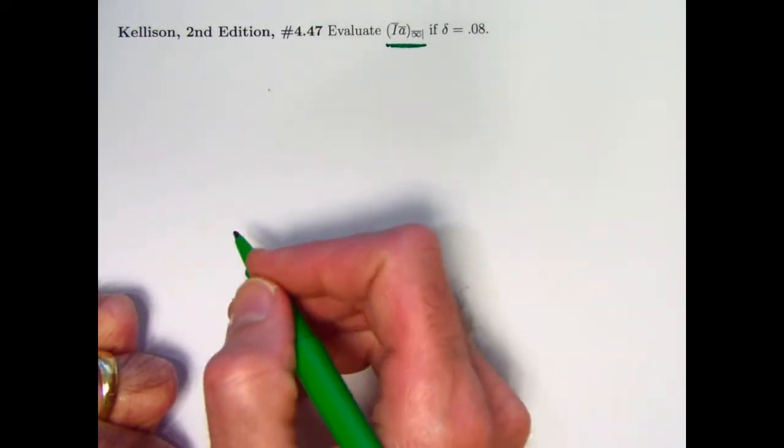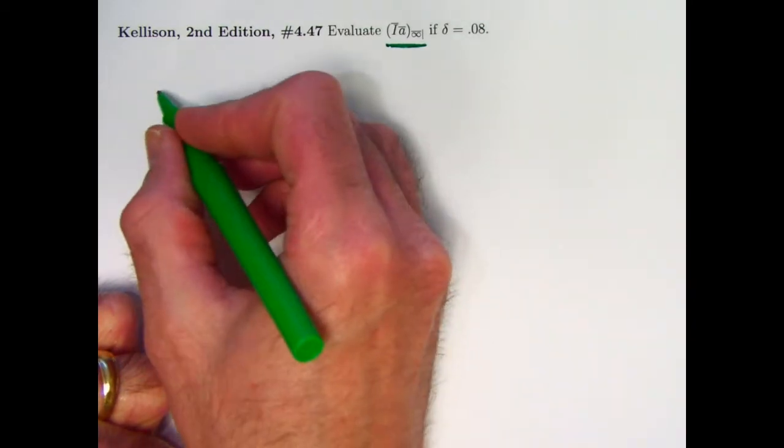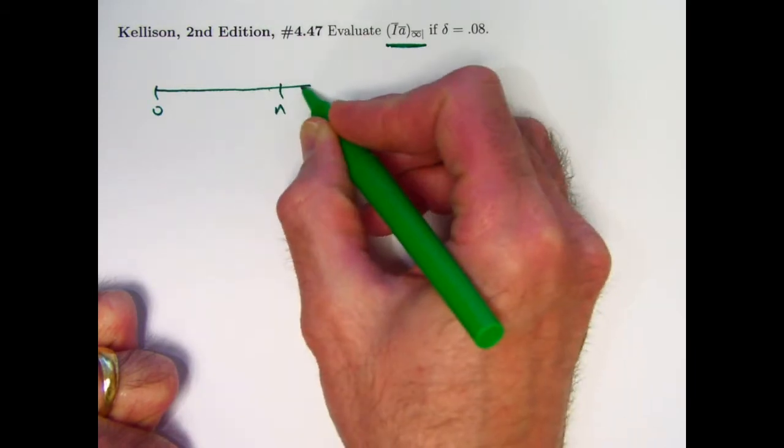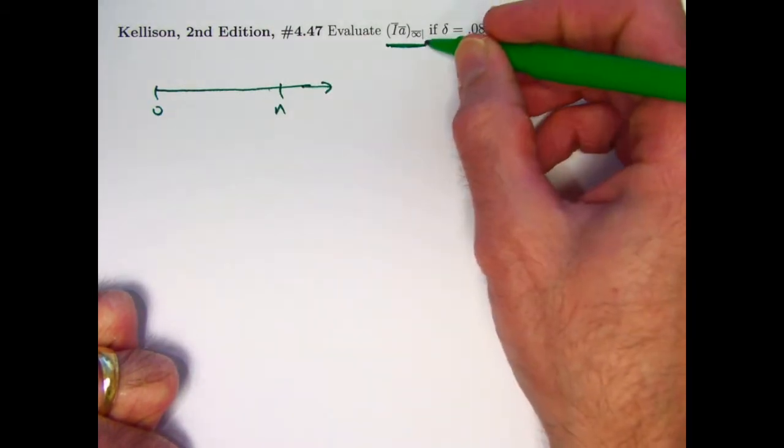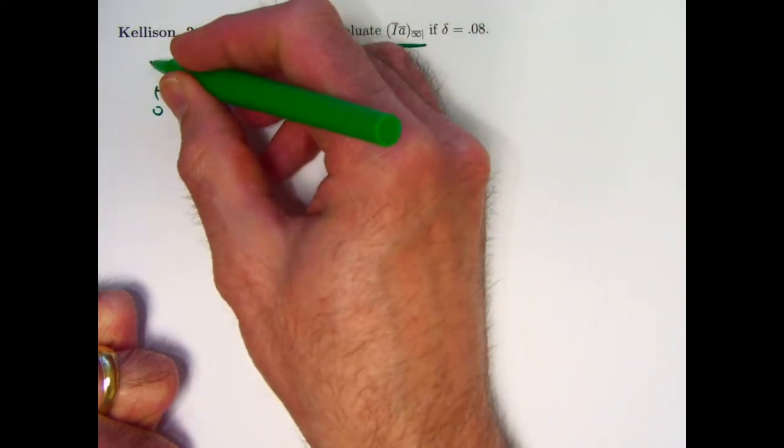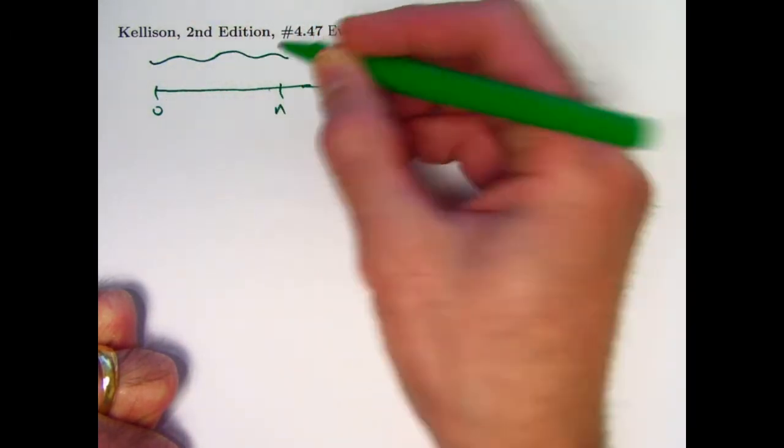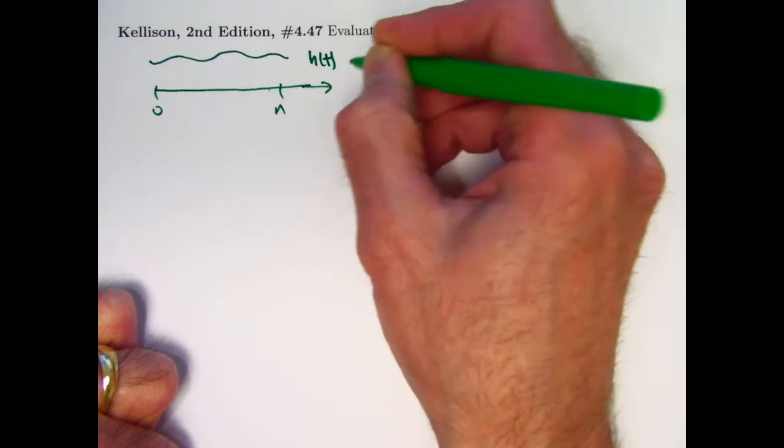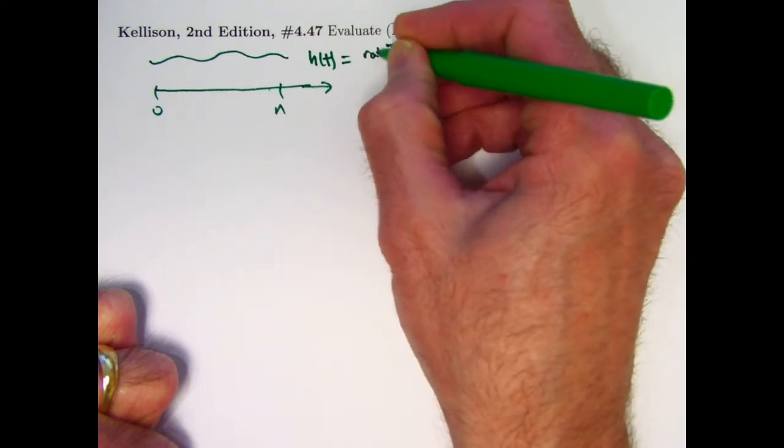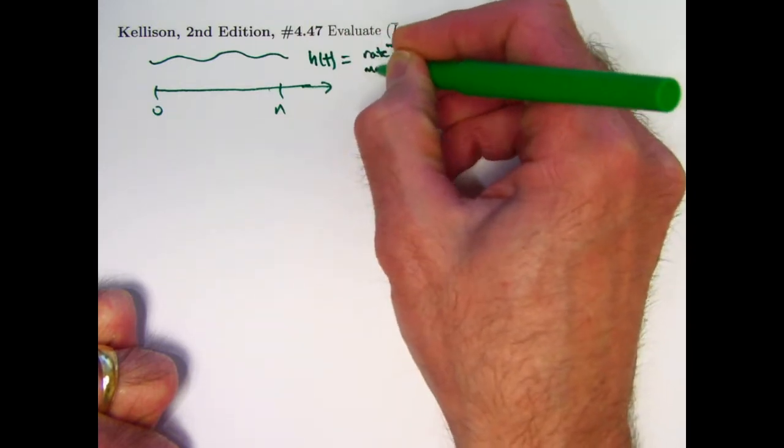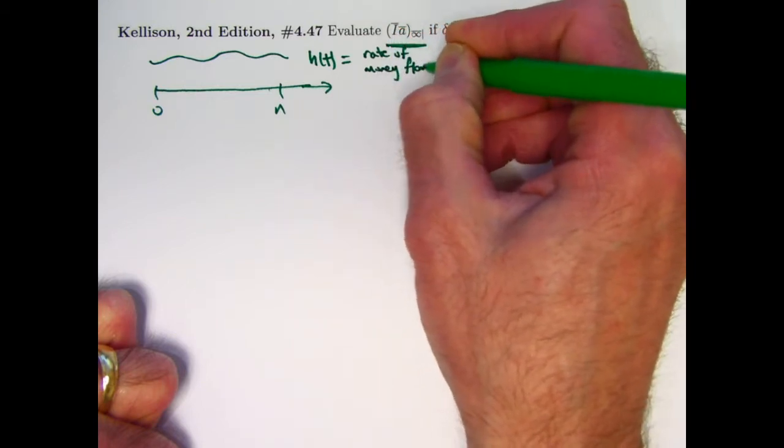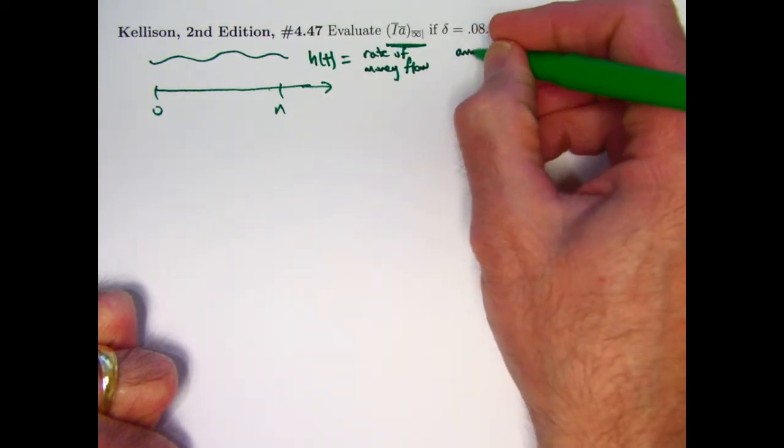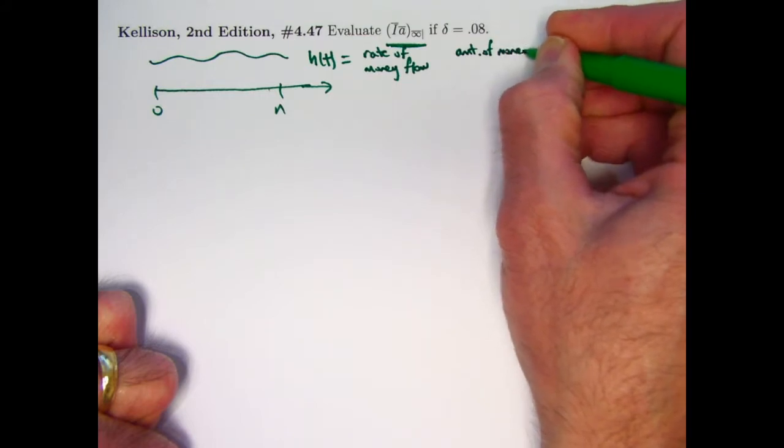I want to take the opportunity before we solve the problem to think more generally about what's going on with continuous payment streams. So let's imagine a timeline here. And let's go ahead and take a finite amount of time from 0 to n here initially. Ultimately, we're going to let n go to infinity. Now let's imagine we've got some function here. It doesn't have to be constant. It doesn't have to be increasing. That is representing the payment stream. Cash flow. It's really a rate of money flow might be the most descriptive way of saying what it means. It's important to think about the units for such a thing. It would be in an amount of money per unit time.